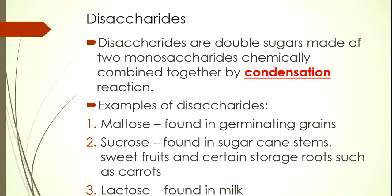What are some examples of disaccharides? They would include: number one, maltose, which is found in malt and barley; number two, sucrose, which is found in large amounts in sugarcane stems, in sweet fruits and certain storage roots such as carrots; and number three, lactose, which is a milk sugar found in milk.